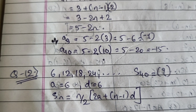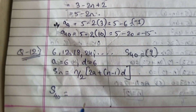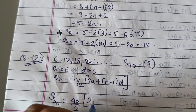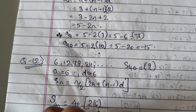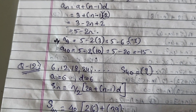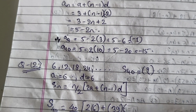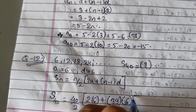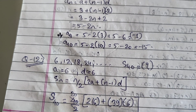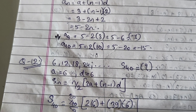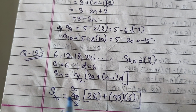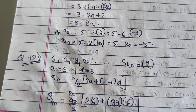S40 = 40/2 × (2×6 + (40−1)×6) = 20 × (12 + 39×6). Calculate 39×6 = 234, then 12 + 234 = 246. Multiply 20 × 246 = 4920. So S40 = 4920.